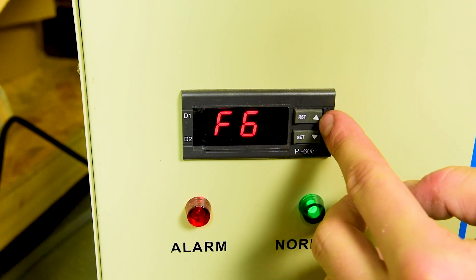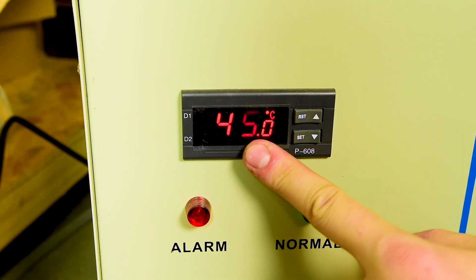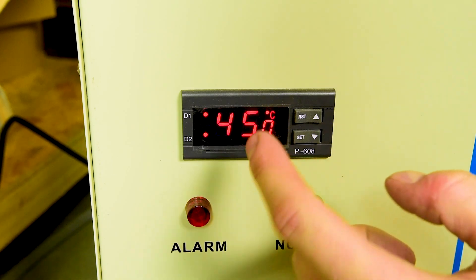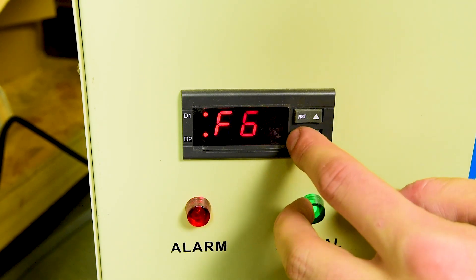Now F6 is the alarm for a room temperature. If you're in a country which goes over to 45 degrees ambient or you're in a room which gets over 45 degrees ambient you will want to change that higher otherwise you can leave it as it is.